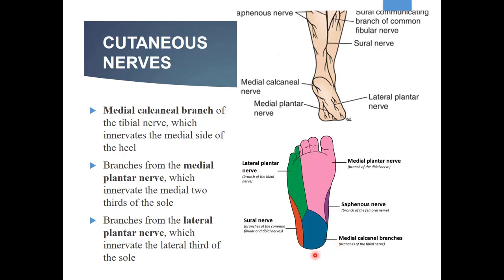The cutaneous nerves supplying the sole of foot — there are three nerves. Number one is the medial plantar nerve. See here, this is the medial plantar nerve, which is a branch of the tibial nerve. It supplies the medial two-thirds of the sole of foot. Then there is the lateral plantar nerve, which is also a branch of the tibial nerve — it supplies the lateral one-third. Then there is the medial calcaneal nerve, also a branch of the tibial nerve.